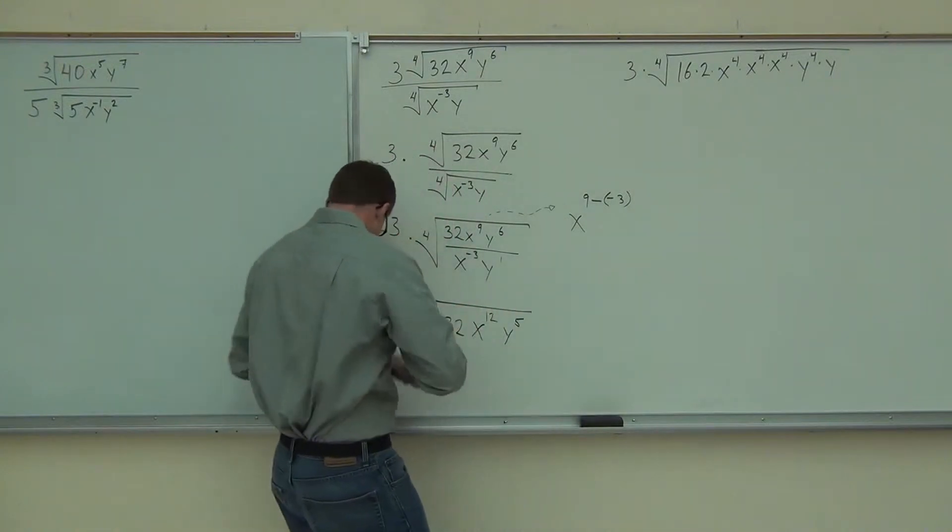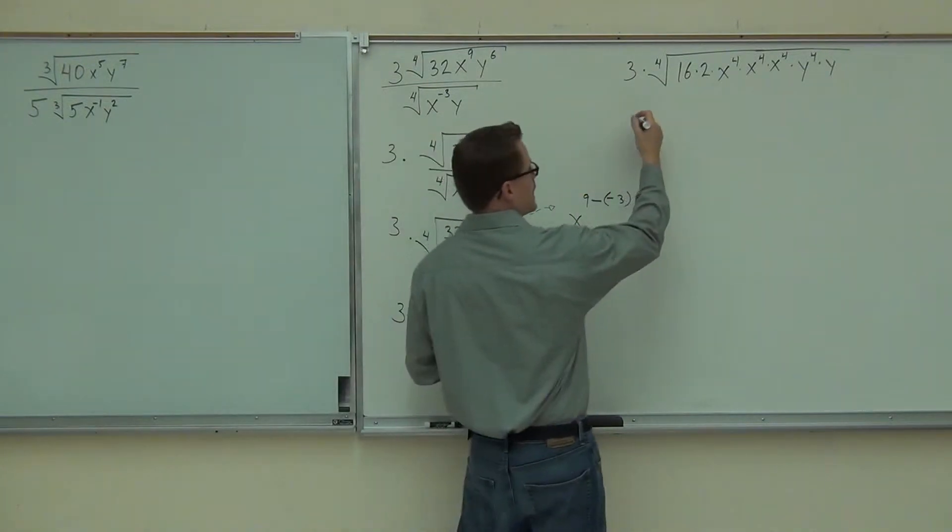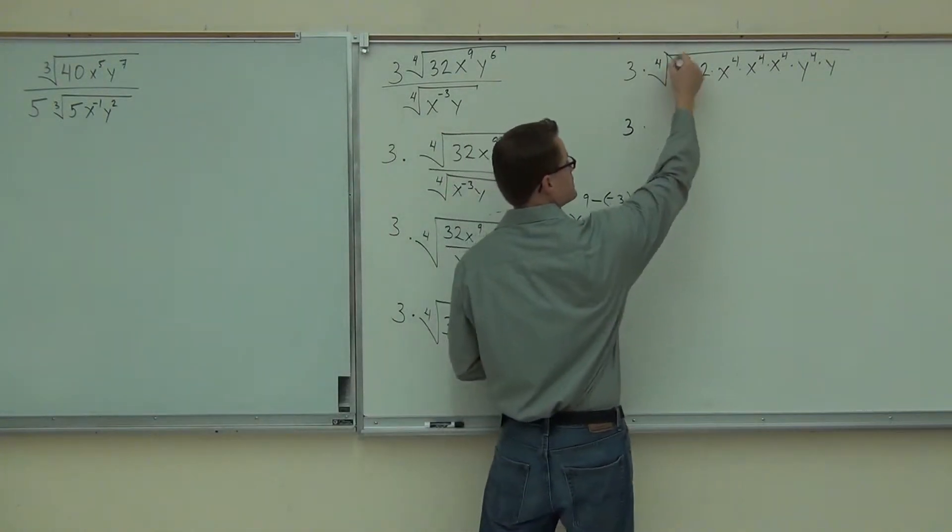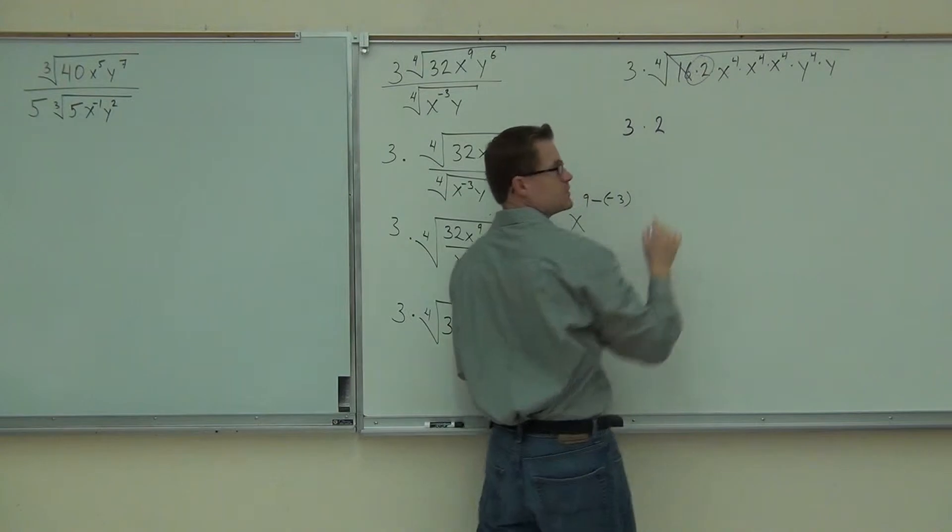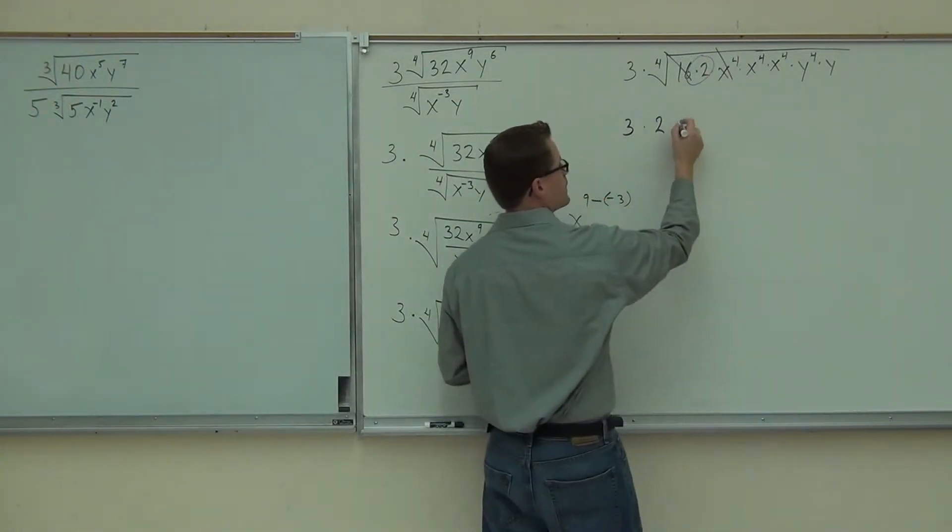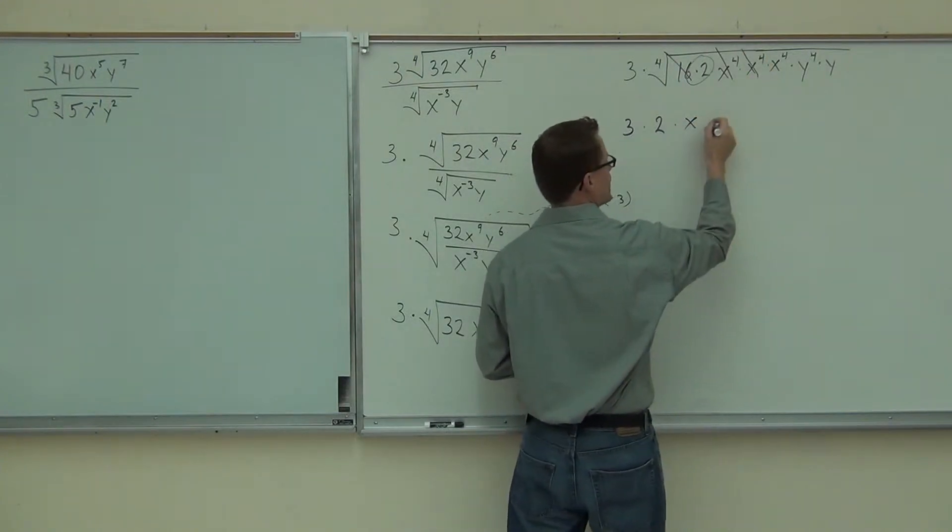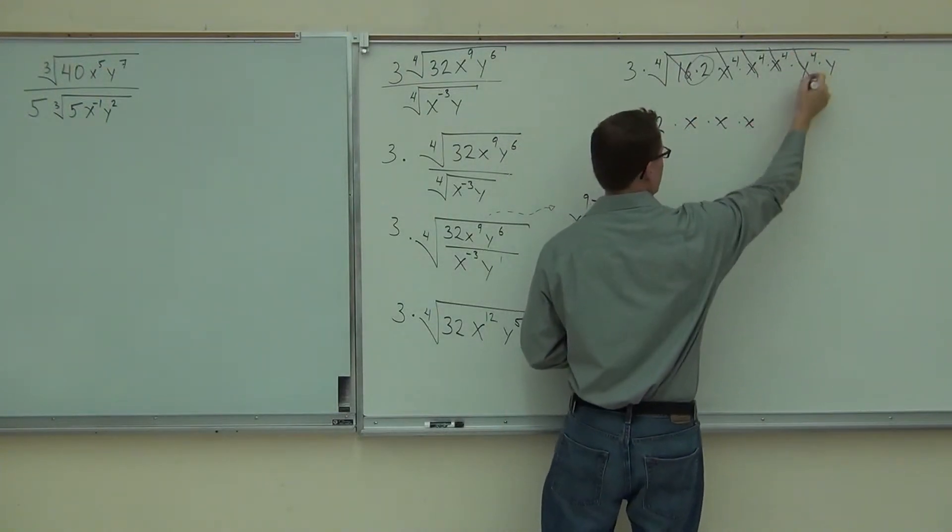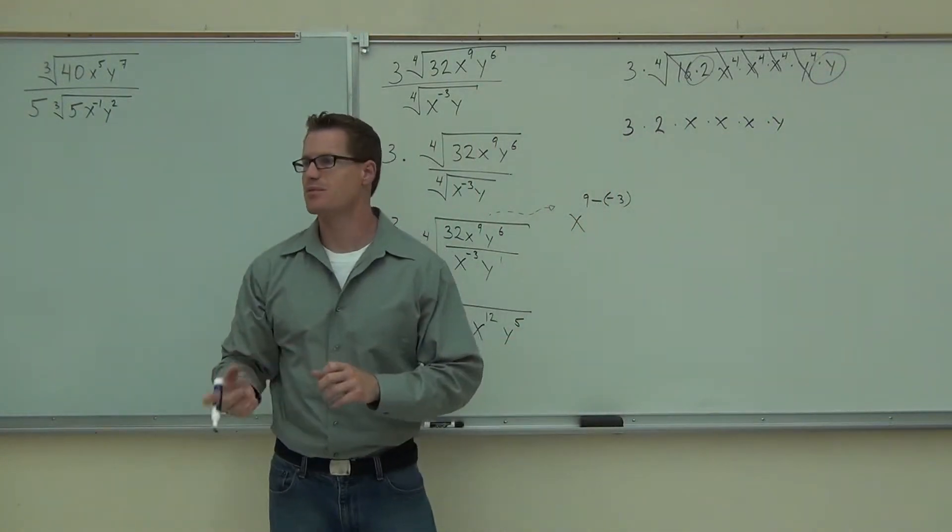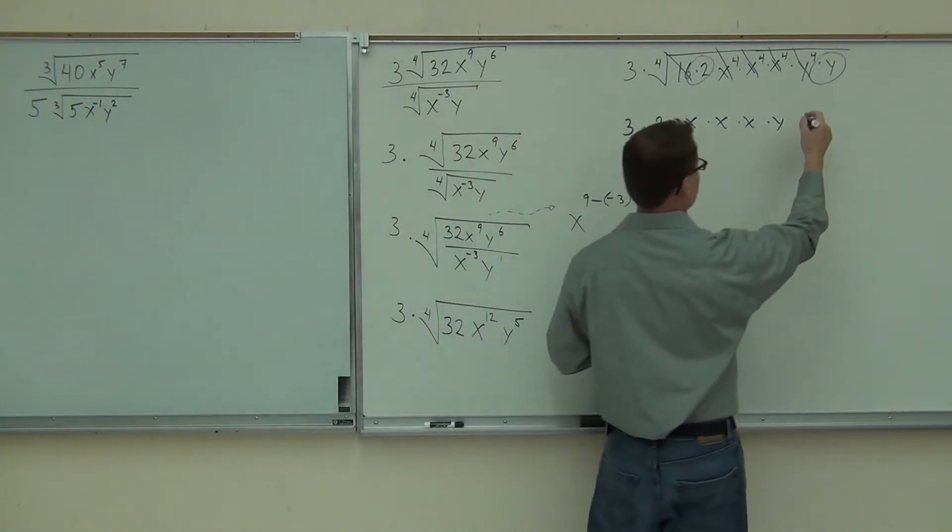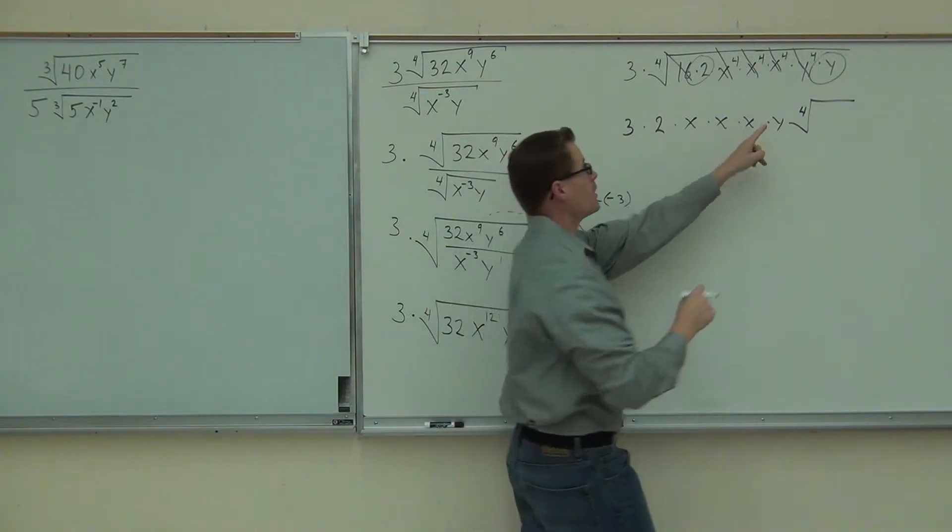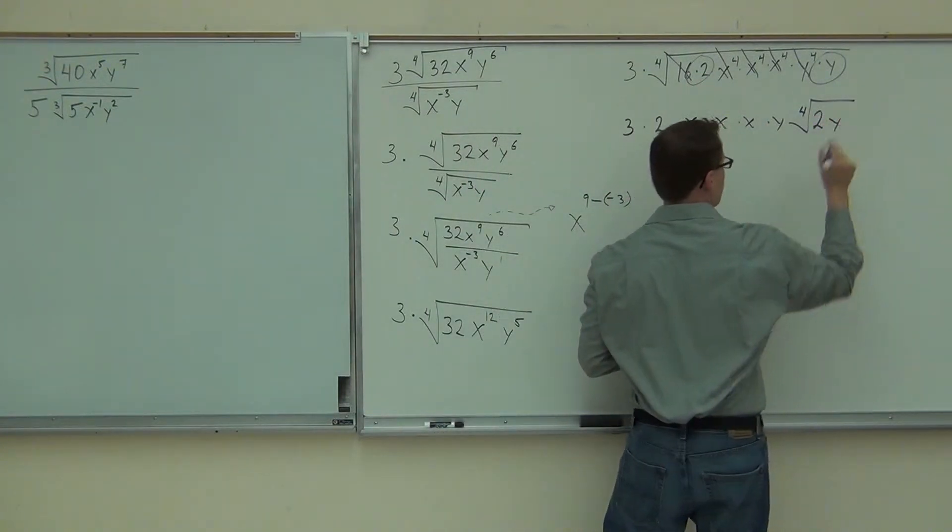Now, we're still going to leave that three out there. That three hangs out until the very end, until we can multiply it by something. We'll take the 4th root of 16, that gives you 2. 4th root of 2, I can't do anything with that. I'm going to circle it. It's going to stay inside of my radical. 4th root of x to the fourth, that gives you x. Then x. Then x. Another y to the fourth gives you y, but that y I can't do much with. The power is less than the root. That means I can't simplify it anymore. So there's only two things left in my radical. Definitely want to make sure I have a 4th root. Make sure that 4 is there. Then I'm going to have a 2y inside of it.